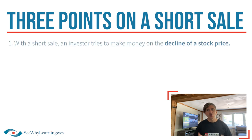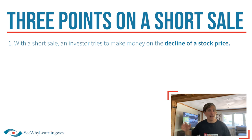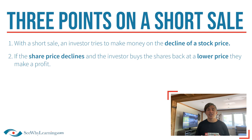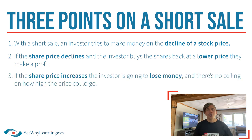Number one: with a short sale, the investor attempts to make money on the decline of a stock price. They borrow shares from a dealer and immediately sell them. They know at some point they have to return those shares, but they hope they can buy them back at a lower price — and the difference is pure profit. Point number two: if the price declines and they buy the shares back at a lower price, they make a profit. But point number three: if the share price increases, they're going to lose money.